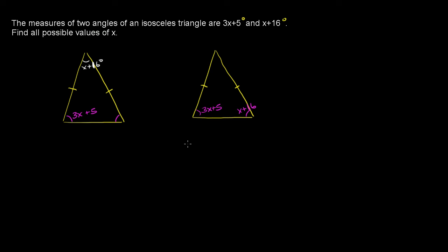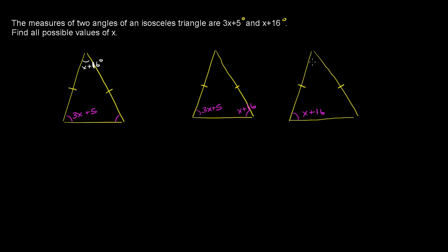And then the final possibility — we haven't exhausted all of them — is if we swap these two. If this one is x plus 16 and that one is 3x plus 5. Swapping these two aren't going to make a difference because they are equal to each other. So the last situation is where this angle down here is x plus 16 and this angle up here is 3x plus 5.